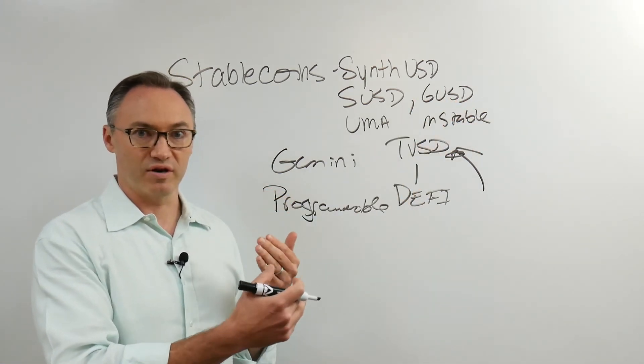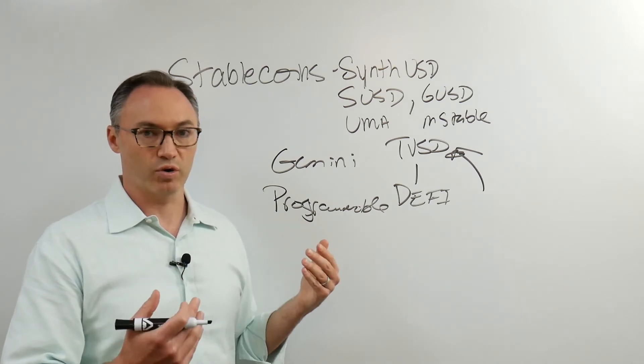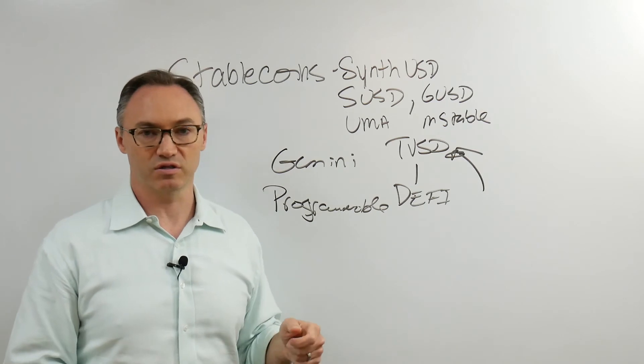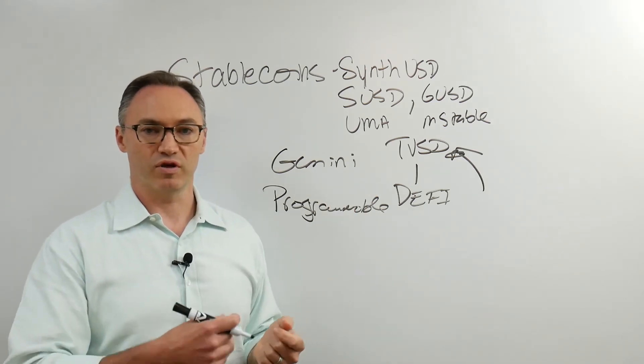If I'm an institutional investor and I have a couple million dollars worth of cryptocurrency custody with Gemini and I want to trade it in and out, I don't want to go into fiat currency. Gemini says we don't want to deal with having to bring in DAI because what if DAI goes to $1.20? Then we have issues with how we're accounting for everything. They say we'll just create our own dollar.